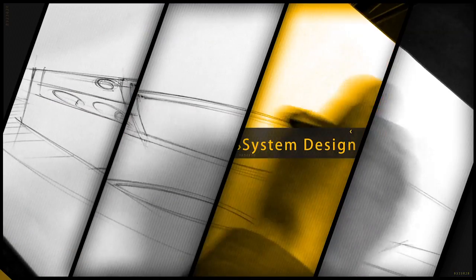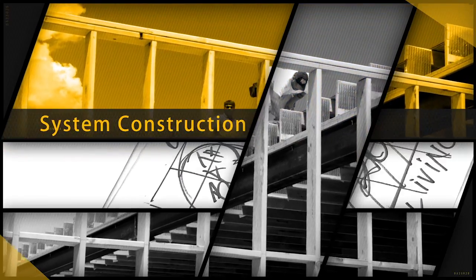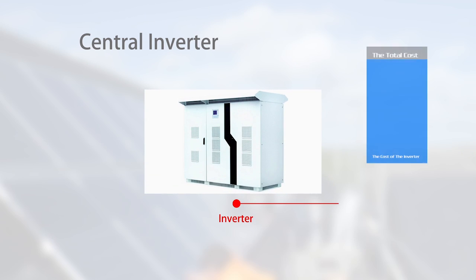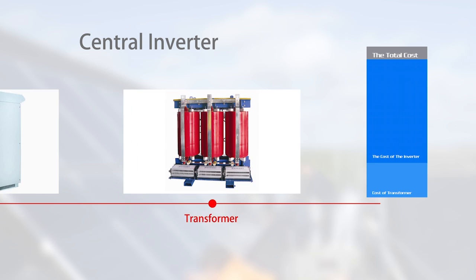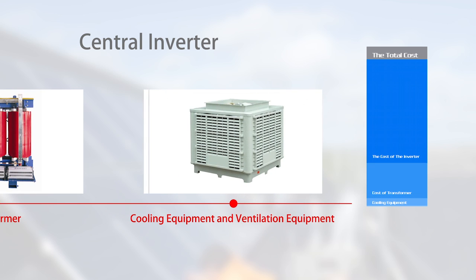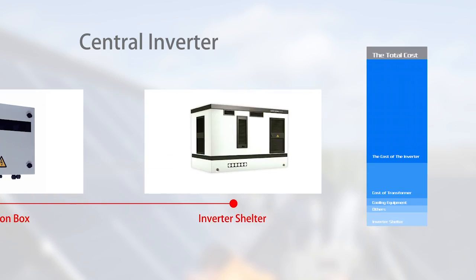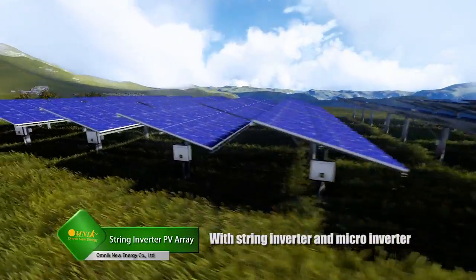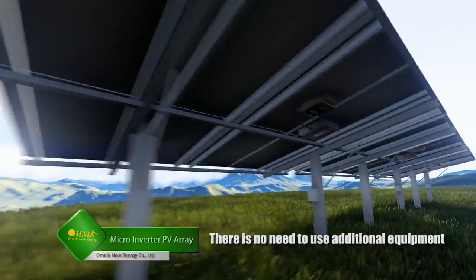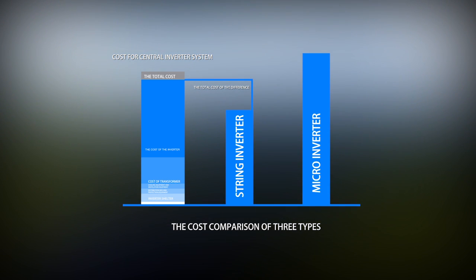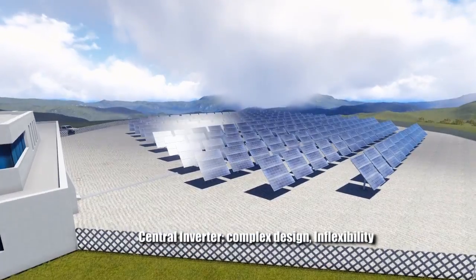To select the right inverter and maximize investment return, we will guide you from the very beginning of power plant design to later operation. Regarding system total cost analysis: if you select a central inverter, you will also need to configure transformer, cooling equipment, ventilation equipment, protection equipment, distribution box, and inverter shelter. With string inverter and micro inverter, there is no need for additional equipment. Therefore, though the upfront cost of a central inverter is cheaper, you need to pay more in additional costs than with a string inverter.